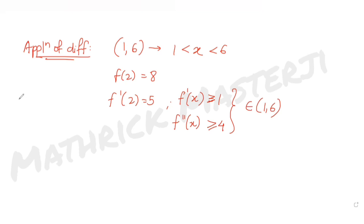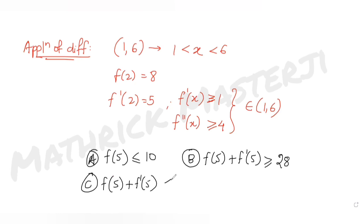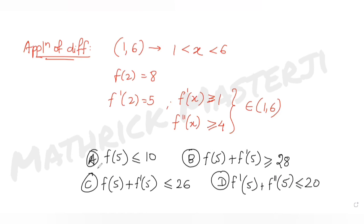The four answer choices are: (A) f(5) ≤ 10, (B) f(5) + f'(5) ≥ 28, (C) f(5) + f'(5) ≤ 26, and (D) f'(5) + f''(5) ≤ 20. We need to figure out which answer choice is correct.